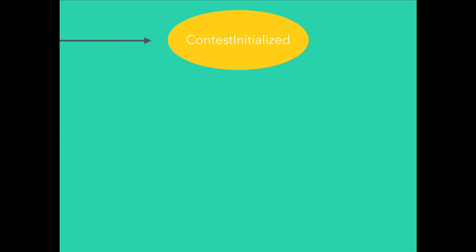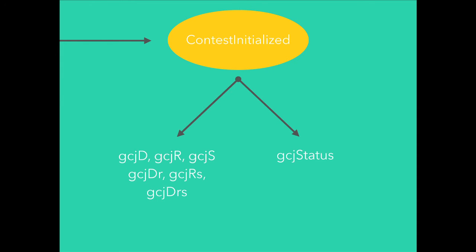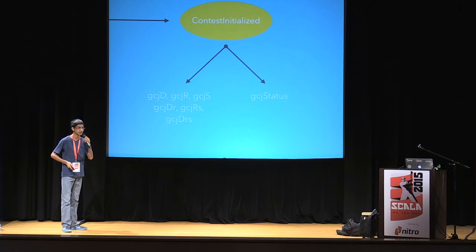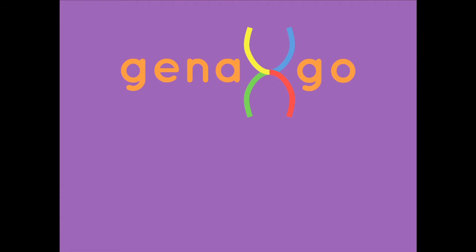Once that's done, we're contest initialized — the last state — and we can run all the commands we'd like. I have gcj status, which I ran at the beginning, and gcj drs — download, run, and submit — which I've also split into subtasks so you can run just a few if you'd like. This plugin is open source at the URL shown. Next, let's move on to the second project: Genalgo.